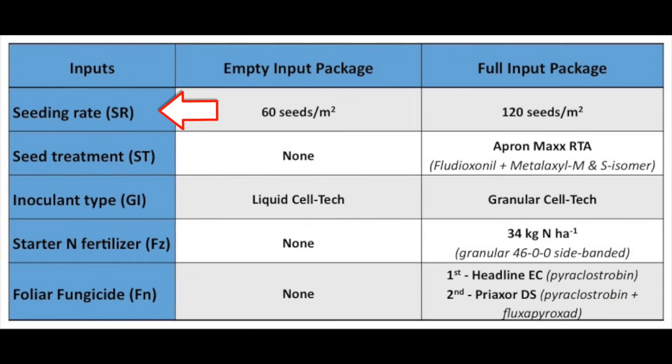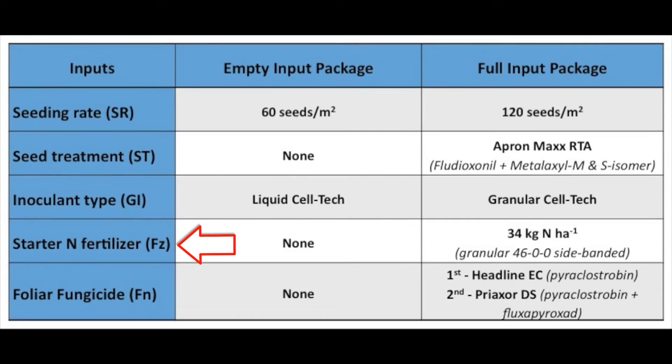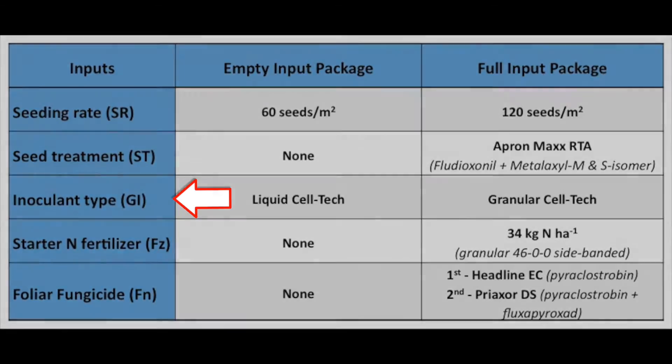What we did is we looked at what inputs farmers are most often considering or looking at spending those extra dollars on, and we applied them alone as well as in combination to assess the interaction of those inputs. The inputs we chose were seeding rate — a low versus a high seeding rate to target a recommended plant population — foliar fungicides, seed treatments, starter nitrogen fertilizer, and a granular inoculant instead of a liquid inoculant.